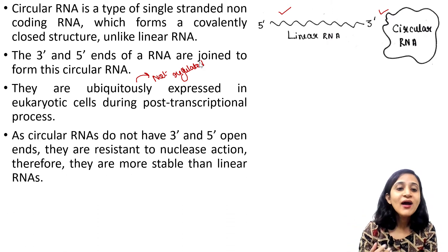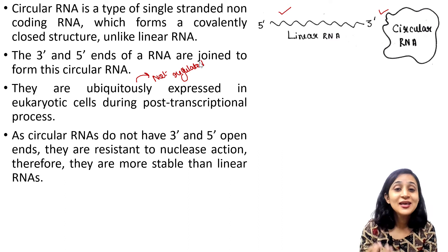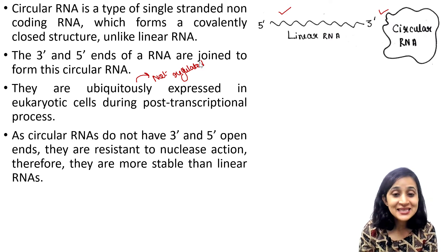As circular RNAs do not have 3' and 5' open ends, they are resistant to nuclease action. Therefore, they are more stable than linear RNAs. Basically, these circular RNAs are very stable because they do not have any open 3' and 5' ends. Therefore, nucleases, these enzymes, cannot get any open end to cleave the RNA. That's why it is very stable.